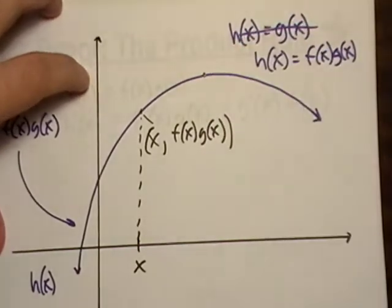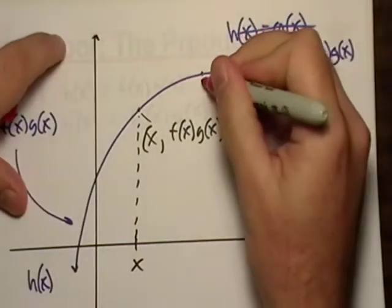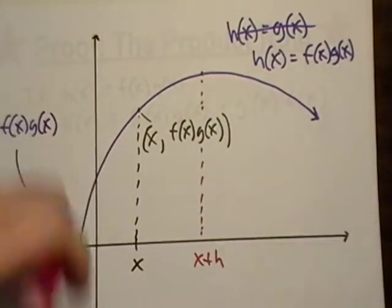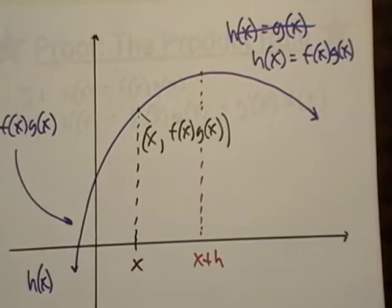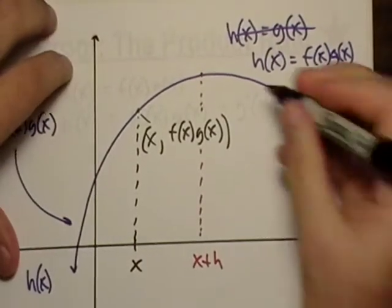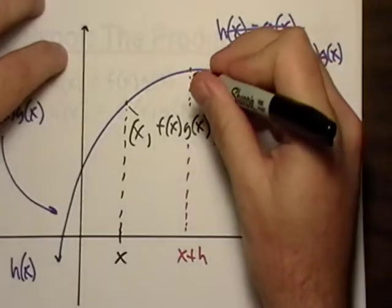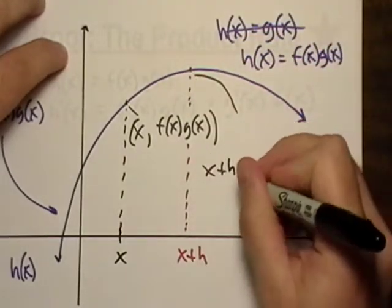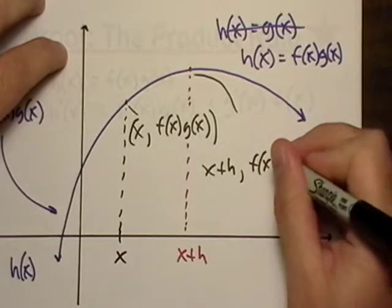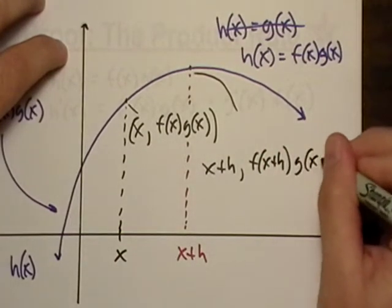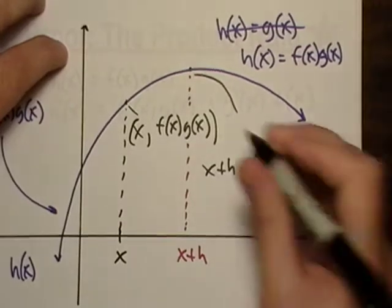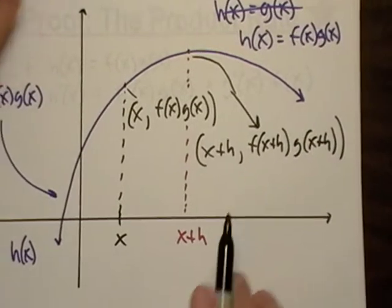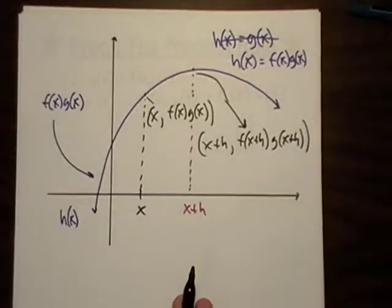And then if I have my other guy go in there, this will be my x plus h guy. Then this point right here, well, I don't even know if I have enough room to write it. That'll be x plus h, f of x plus h, g of x plus h. Kind of a nasty looking point, right? So let's zoom out a little more.